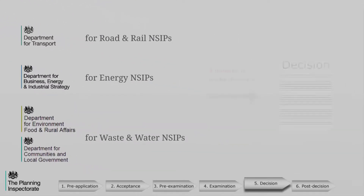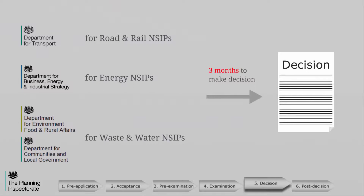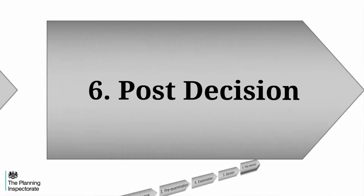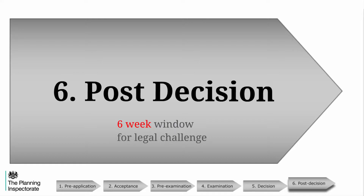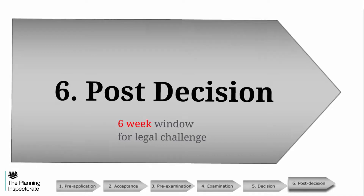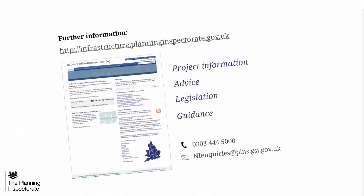The relevant Secretary of State makes the final decision for all NSIPs. The Secretary of State has three months to make its decision whether or not to grant consent. The final stage of the process is the post-decision stage. This provides a six-week window for the applicant, any of the interested parties, or indeed anyone else to legally challenge the Secretary of State's decision.